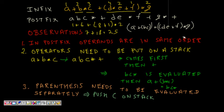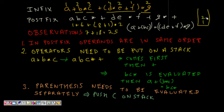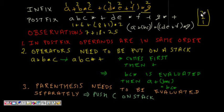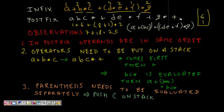To evaluate a postfix expression, we keep pushing things onto a stack. We push a, b, and c — that is 1, 2, 3 — onto the stack until we encounter the star operator. When we encounter an operator, we pop out the top two items, three and two, and apply the operator.